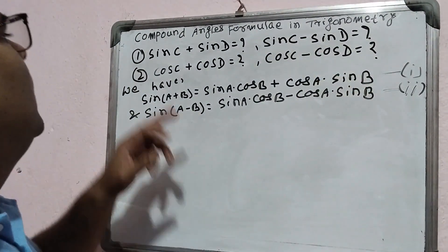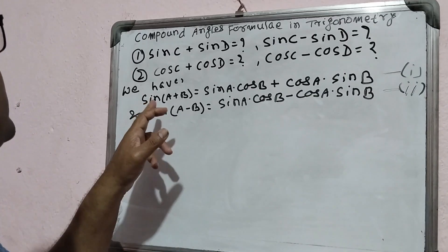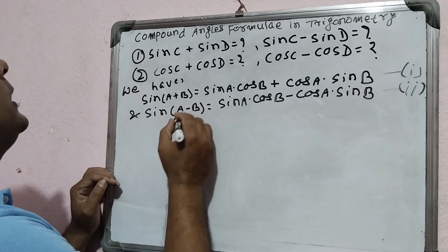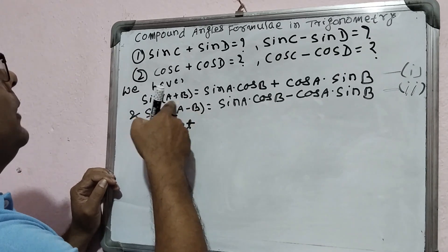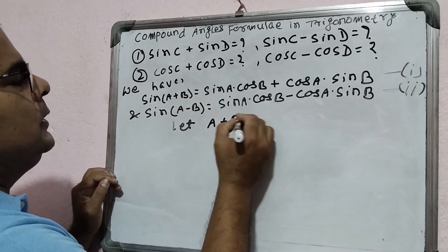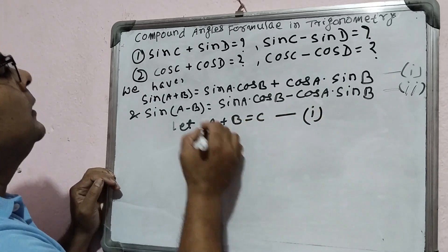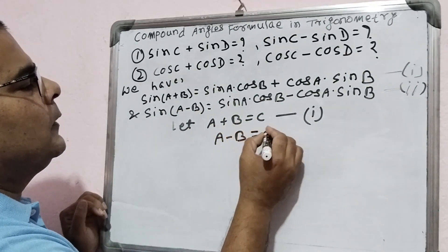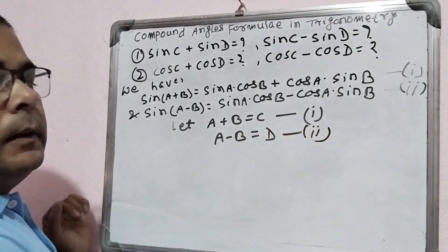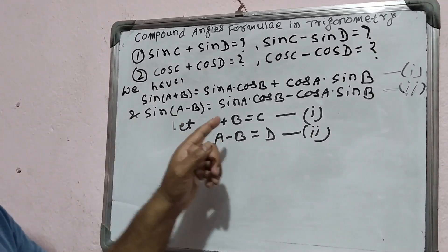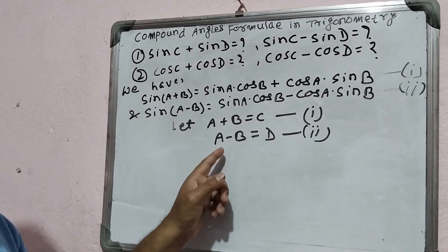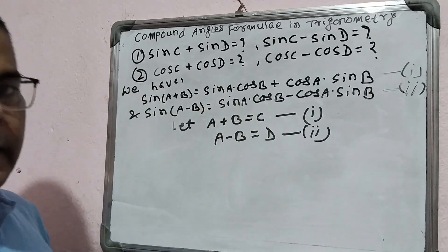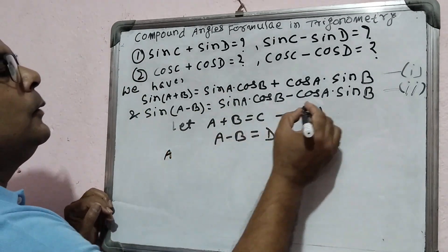From these two equations we derive the sin C and sin D formulas. You can see there are A and B variables, but we need to change these to C and D. The idea is that we suppose — let a plus b equal to C, call this equation one, and a minus b equal to D, call this equation two. After that, we write A and B in terms of C and D.